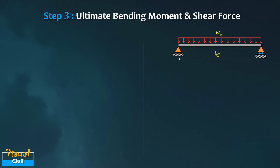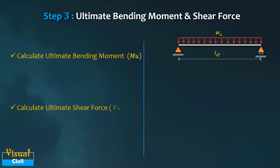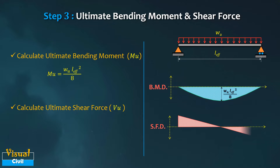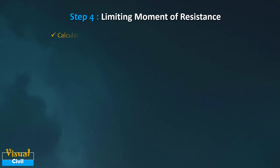In Step 3, compute the ultimate bending moment and ultimate shear force due to factored loads. For a simply supported beam with UDL, the ultimate bending moment Mu equals wL²/8, and the shear force equals wL/2. Next, compute the limiting moment of resistance of the beam section in Step 4.